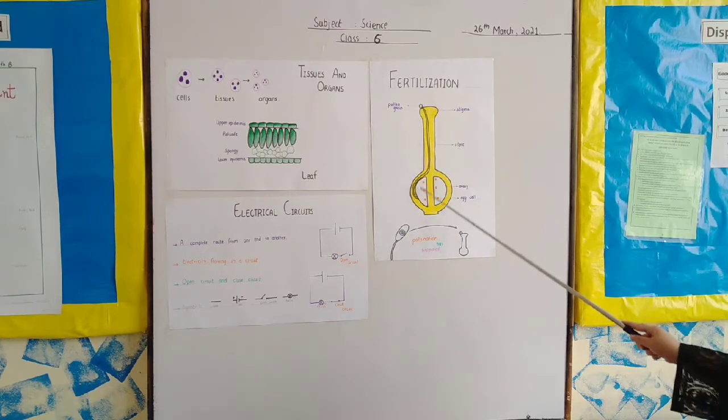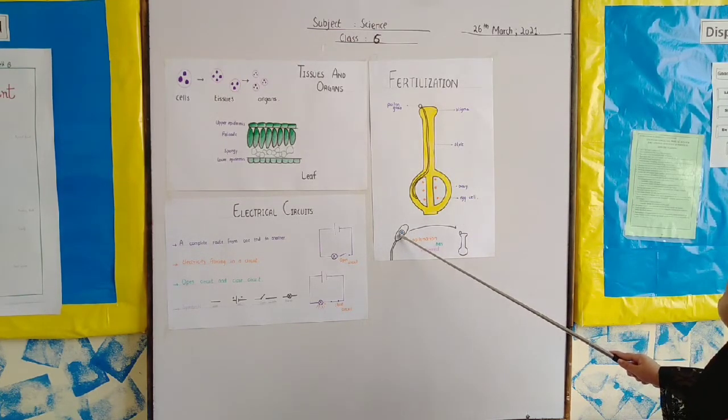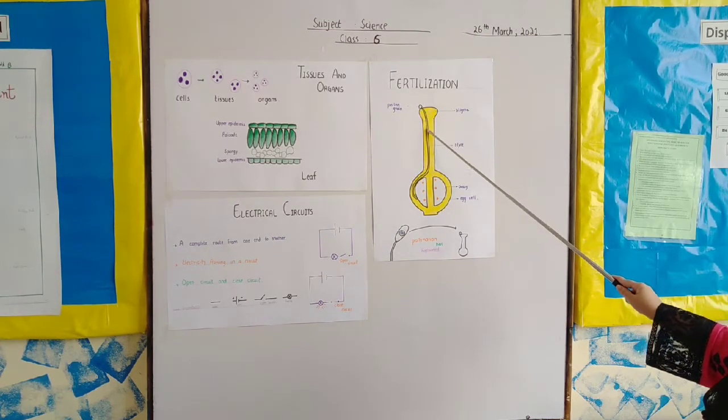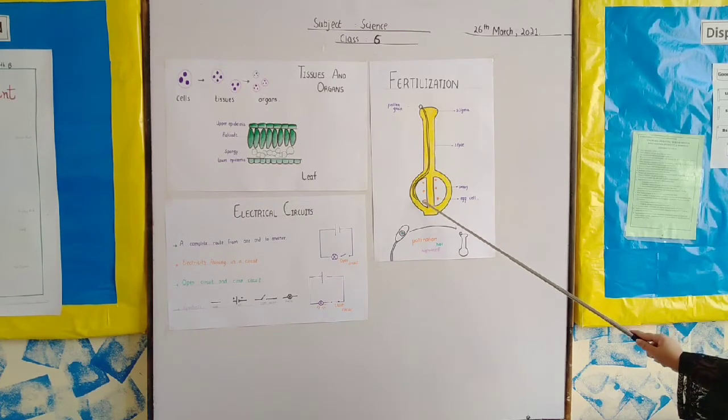Now when it grows a tube, what happens is that inside the pollen cell was the pollen nucleus. So now what happens is that the pollen nucleus moves down the tube from here and goes into the ovary.